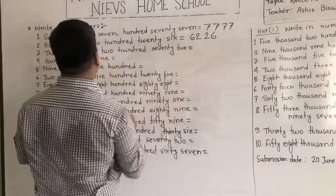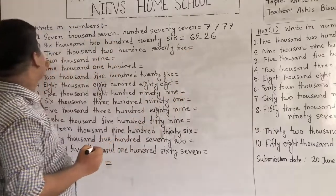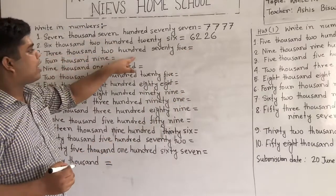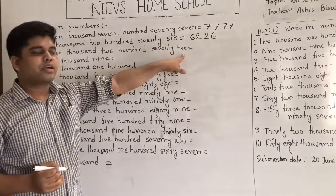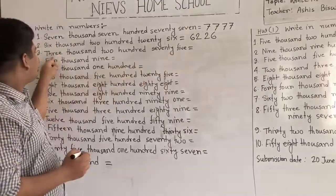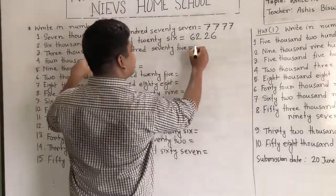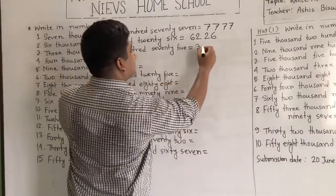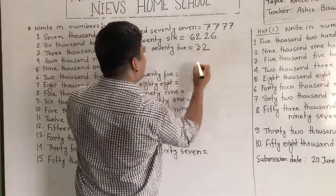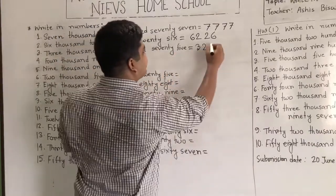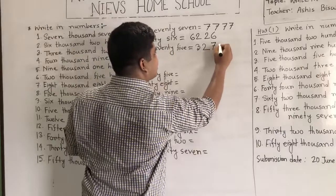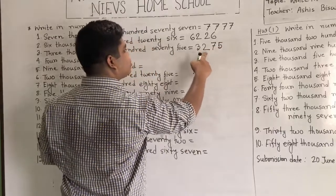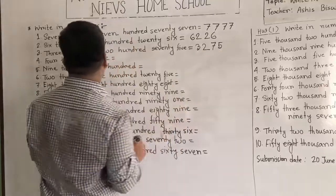Our third number is 3,275. 3,000 means write 3 first. Then 200, so we write 2. Then 75, so we write 75. And it is read as 3,275.